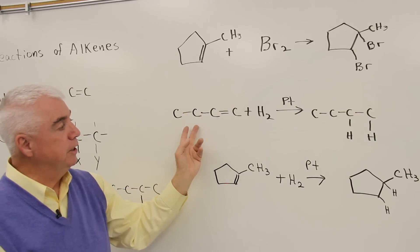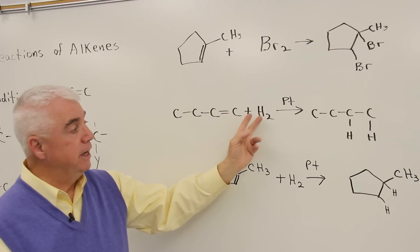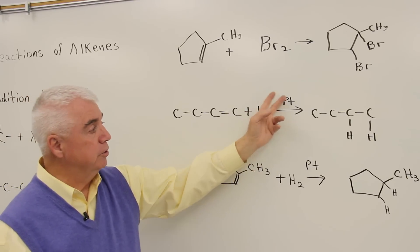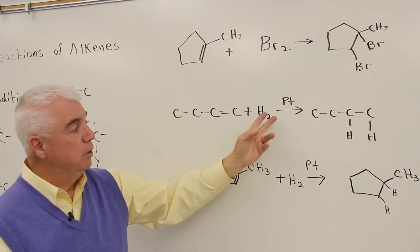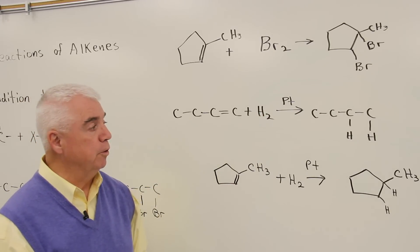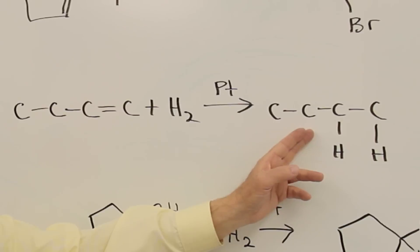A similar reaction is one with hydrogen. In this case, it takes a catalyst in order to get a reaction. The catalyst is platinum. We always place the catalyst over the arrow. One atom of hydrogen adds to the left, one adds to the right. The carbon-carbon double bond disappears.